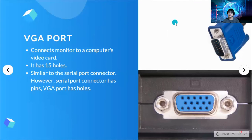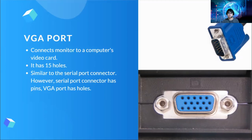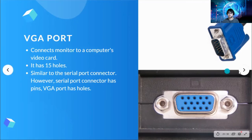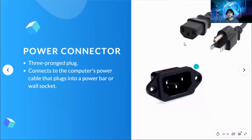We have VGA port. The VGA port connects the monitor to a computer's video card. It has 15 holes and is similar to a serial port connector; however, serial port connectors have pins while the VGA port has holes. Next is the power connector. The power connector is a three-prong plug. It connects the computer's power cable that plugs into a power bar or a wall socket.